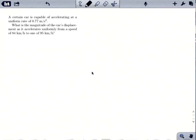Let's go ahead and start talking about this problem. When we're looking at it, it says a certain car is capable of accelerating uniformly at 0.77 meters per second squared. It wants to know what is the magnitude of the car's displacement as it accelerates uniformly from a speed of 84 kilometers an hour to 95 kilometers an hour.